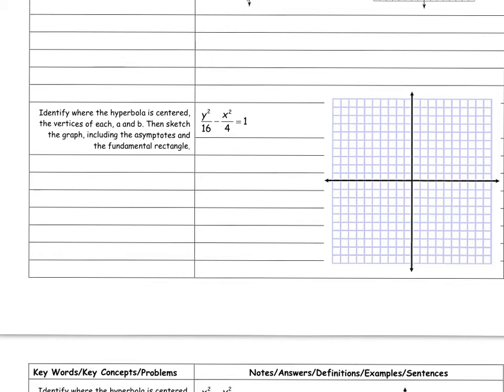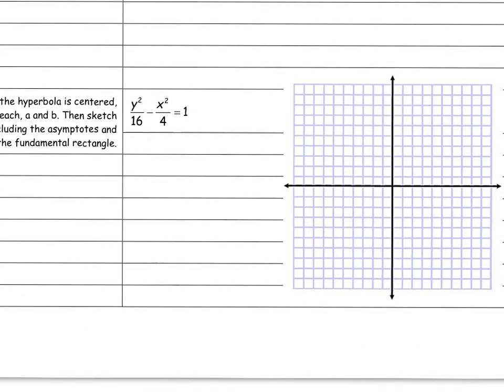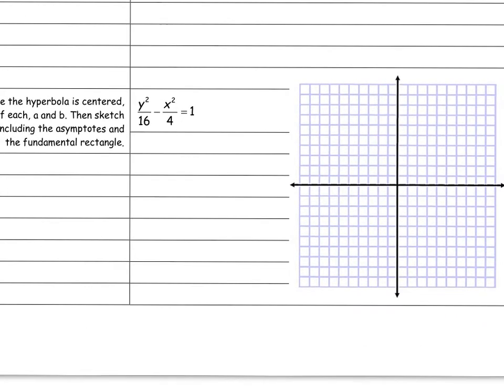Hi all, we're gonna go ahead and start with the last section on hyperbolas, and that's the graphing section. We have a lot to do on this section: identify where the hyperbola is centered, the vertices of each part, the a and b, then sketch the graph including the asymptotes and the fundamental rectangle. I'm gonna zoom in a little bit so we have a clearer view.